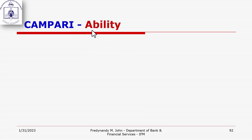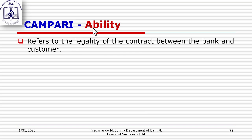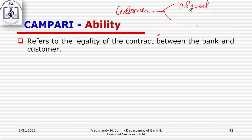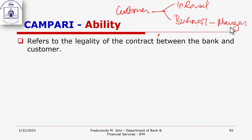Now let's discuss Ability. Ability of the customer — whether an individual for a personal loan or a business — simply means the legality of the contract between the bank and the customer. There are some individuals who, according to law, cannot enter into a contract. For instance, a minor — an individual below the age of majority — cannot enter into a contract and therefore cannot be loaned funds.